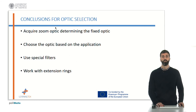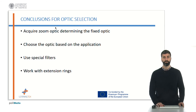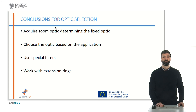It is advisable to acquire a zoom optic that allows determining the fixed optic to be used in each case. It is also very useful to apply special filters to reduce ambient light, with the aim of simplifying the image capture, because the subsequent processing will be easier. Finally, working with extension rings allows having a wide range of focusing distances.